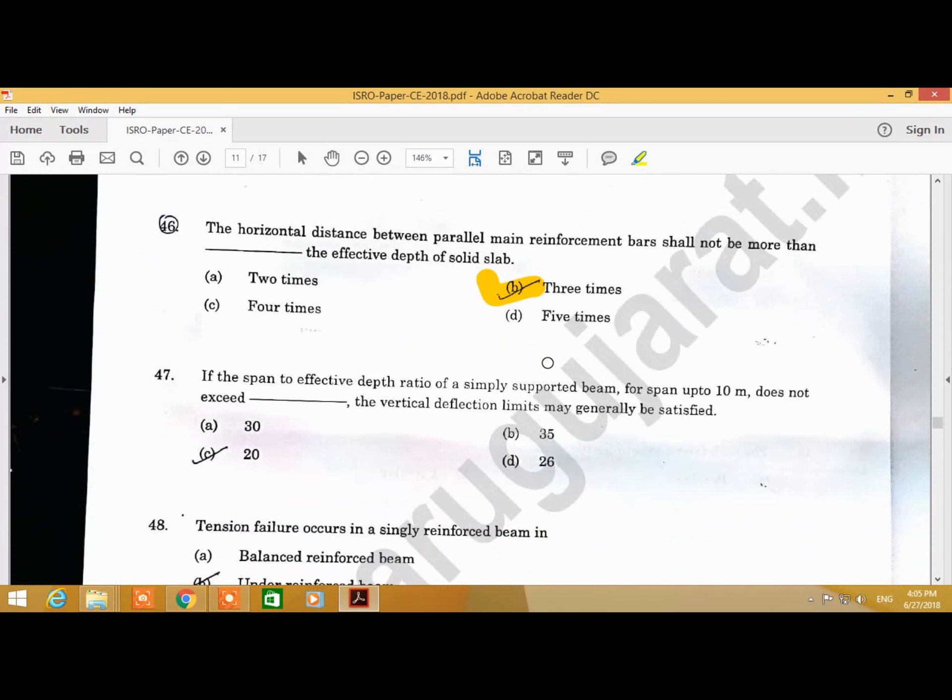Question Number 47: If the span to effective depth ratio of a simply supported beam for span up to 10 meters does not exceed, the vertical deflection limit may generally be satisfied. Answer is B.